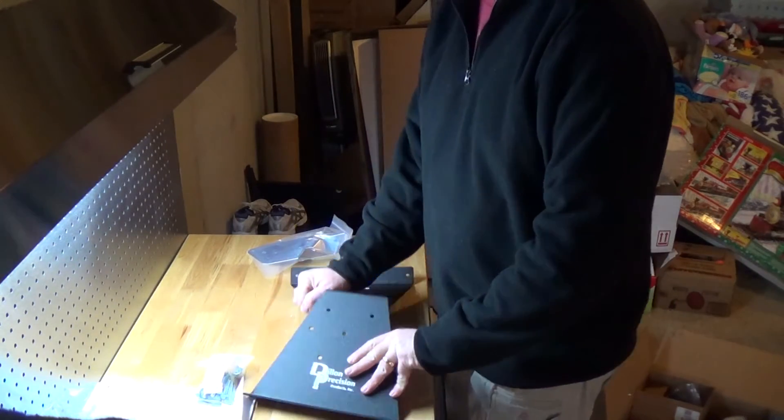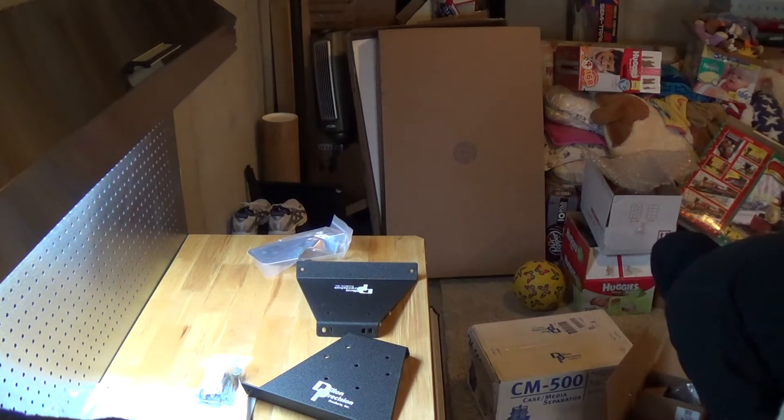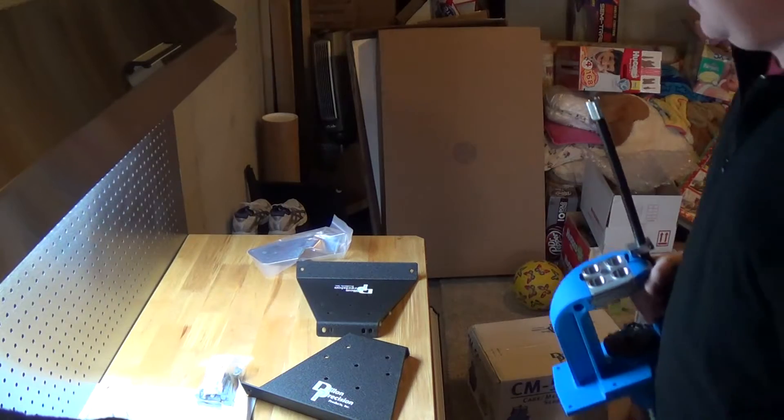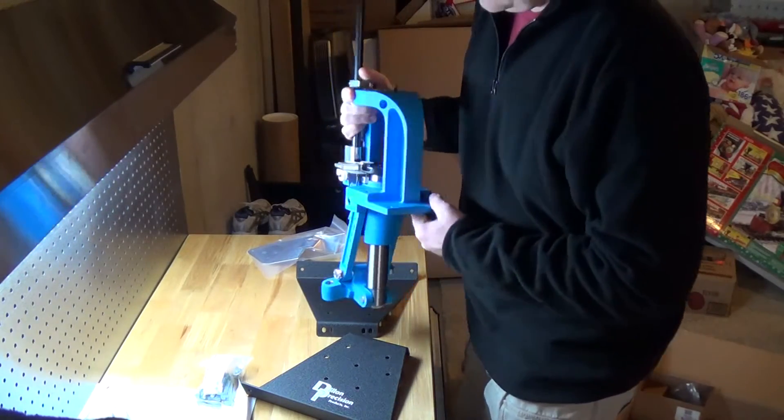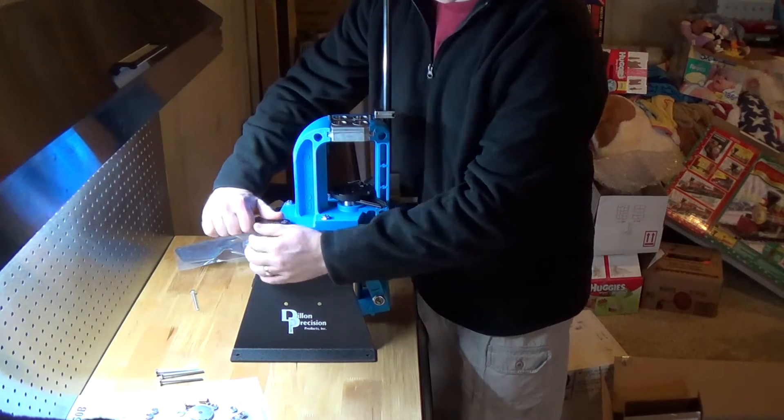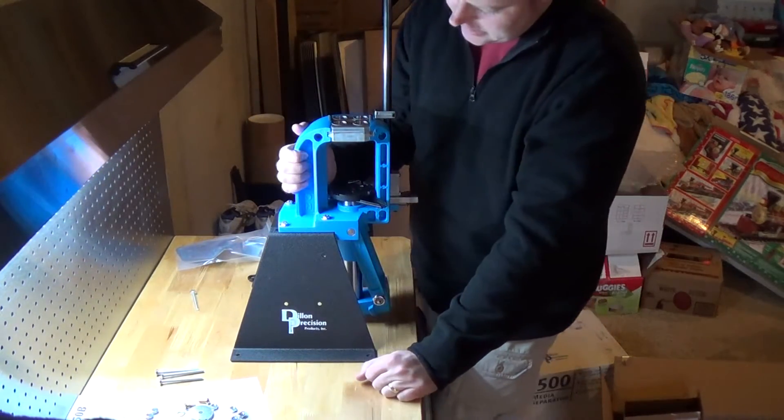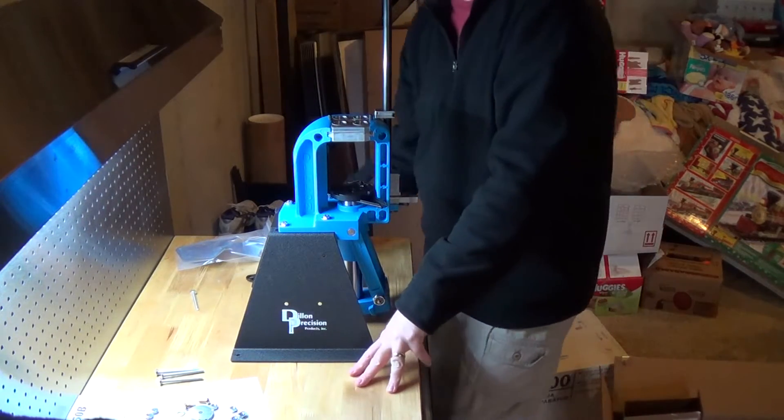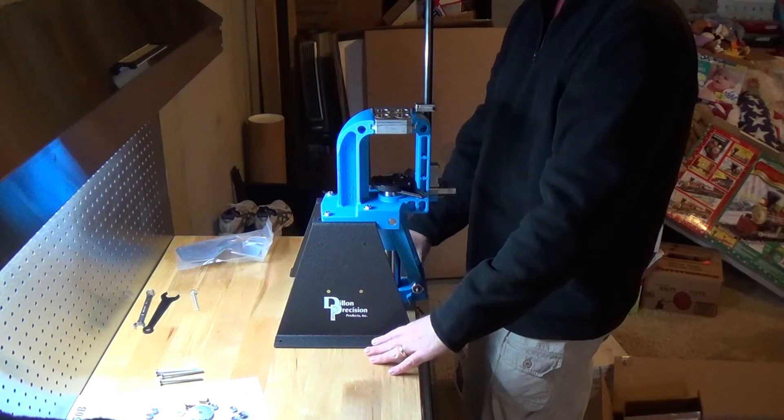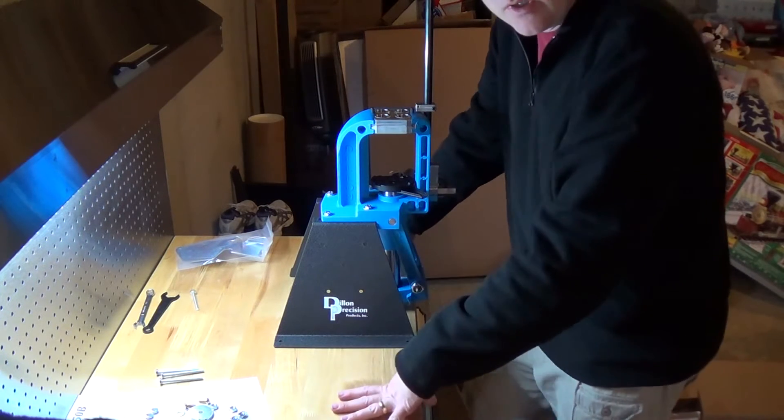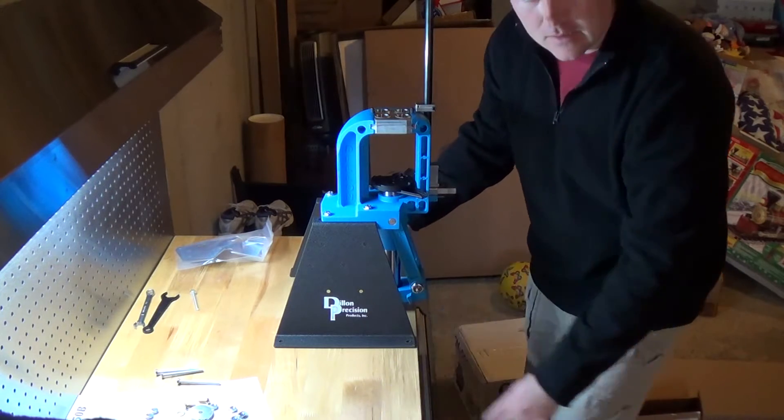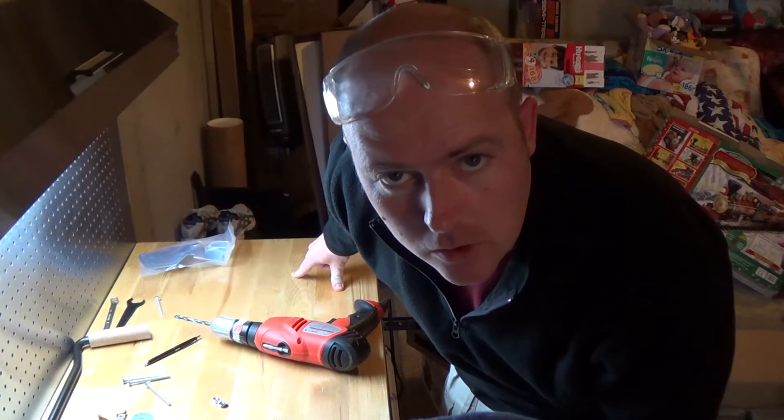Okay, instructions tell me to go ahead and bolt the press to it first. That's what I shall do. Alright, so installed the press to the strong mount brackets. Now the next step is to put it in position wherever you want it on the edge of the workbench and mark the holes, drill them, bolt in place. So I just need to figure out where I want it on this bench.